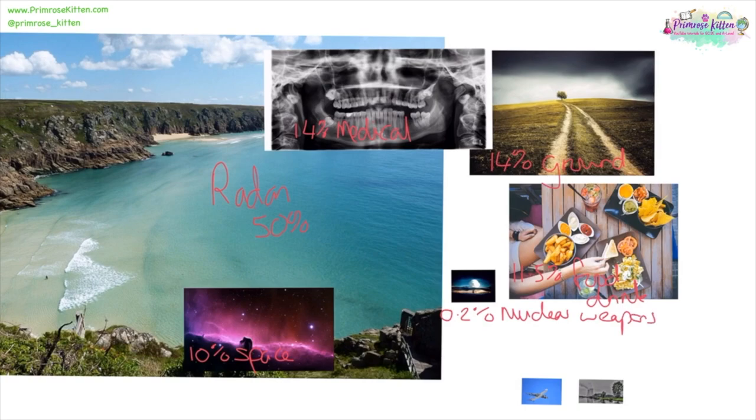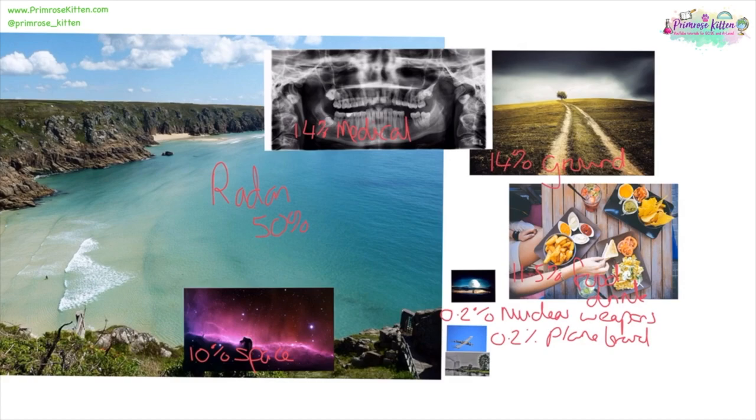From plane travel, and this obviously varies between person, because the more you travel on a plane, the more radiation you are going to be exposed to. And then the last one, we're all going to get a teeny tiny little dose from nuclear power stations. And those are your sources of background radiation.